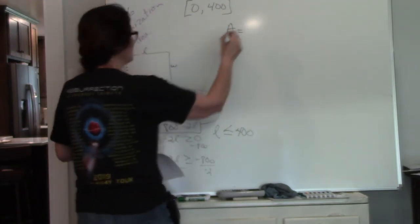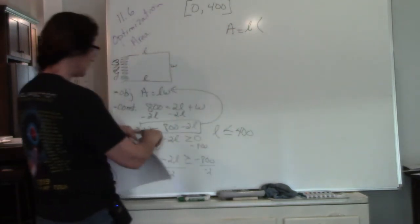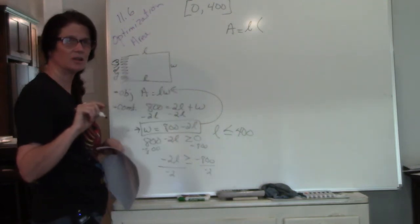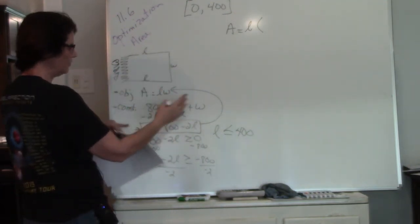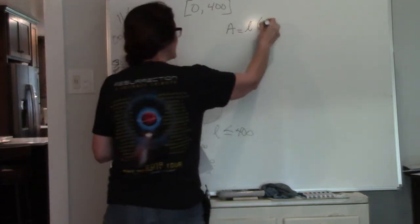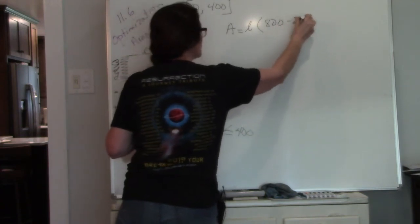Now I'm going to plug my solved constraint into my objective. So I have my area equals my length times width. It doesn't matter which variable I solve for. I'm just gonna pick the easiest one. So width is 800 minus 2L.